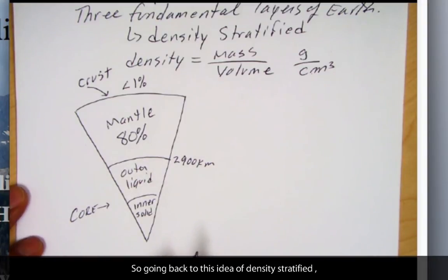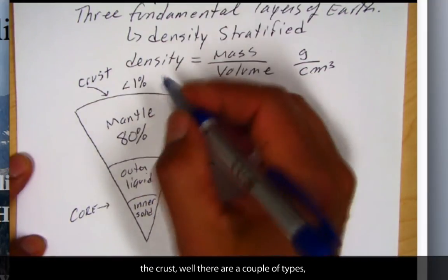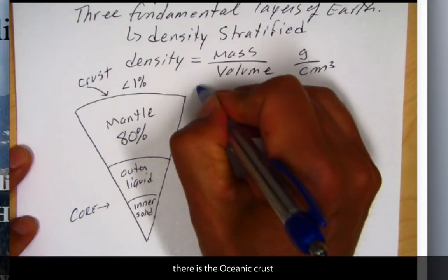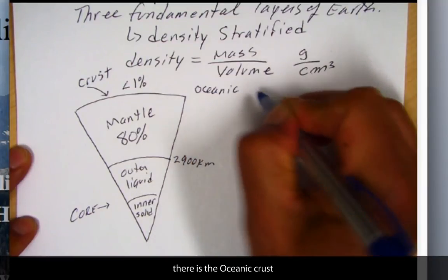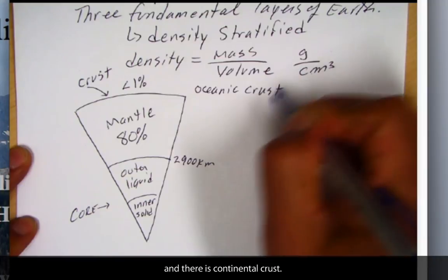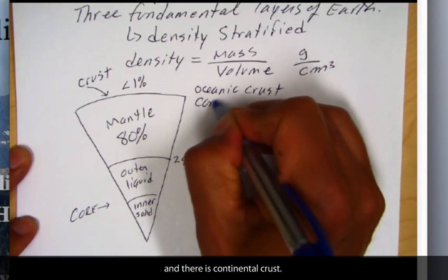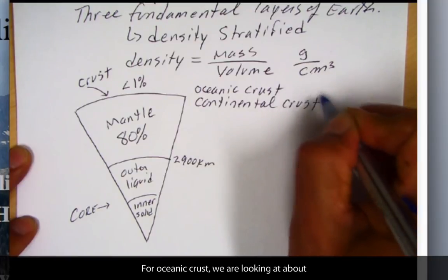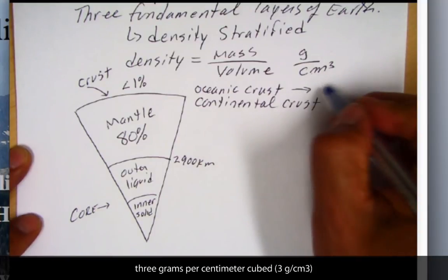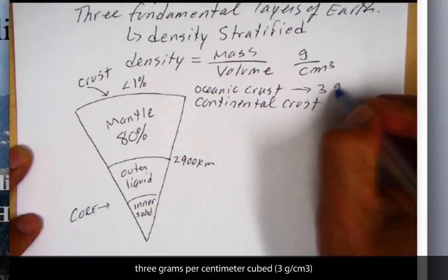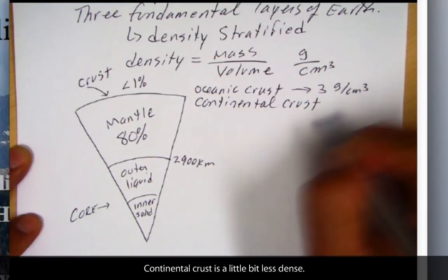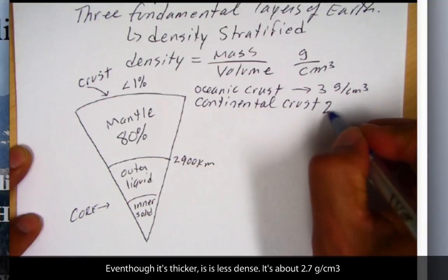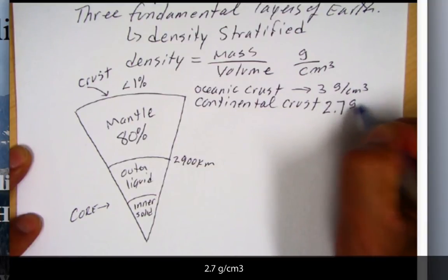And so, going back to this idea of density stratified, the crust, well, in fact, the crust, there's a couple of types. There's oceanic crust and there's continental crust. And for ocean, we're looking at about 3 grams per centimeter cubed. Continental crust is a little bit less dense, even though it's thicker, but it is less dense. It's about 2.7 grams per centimeter cubed.